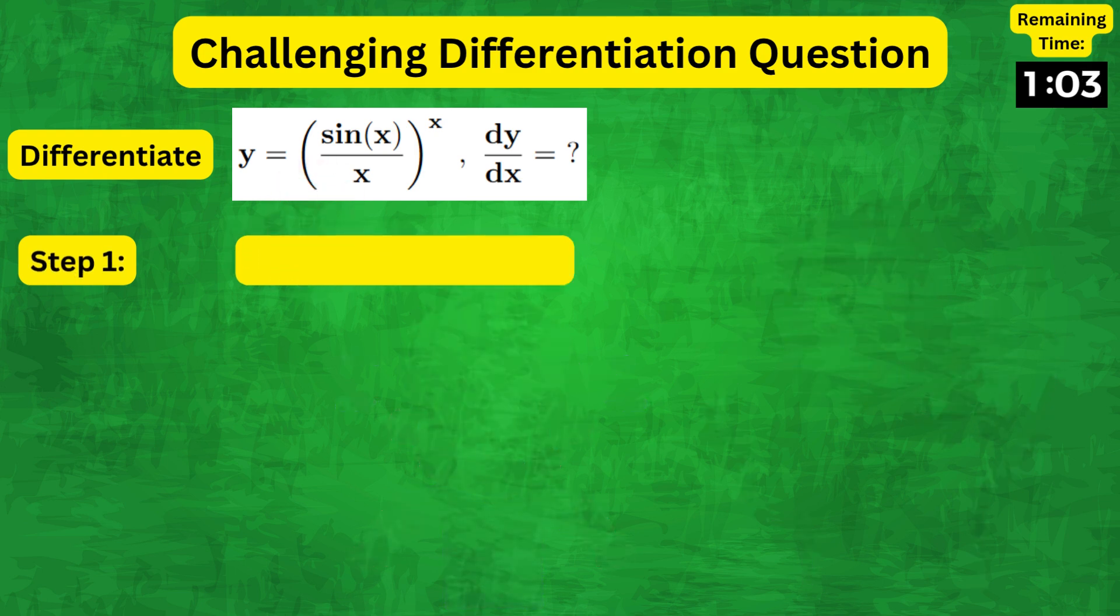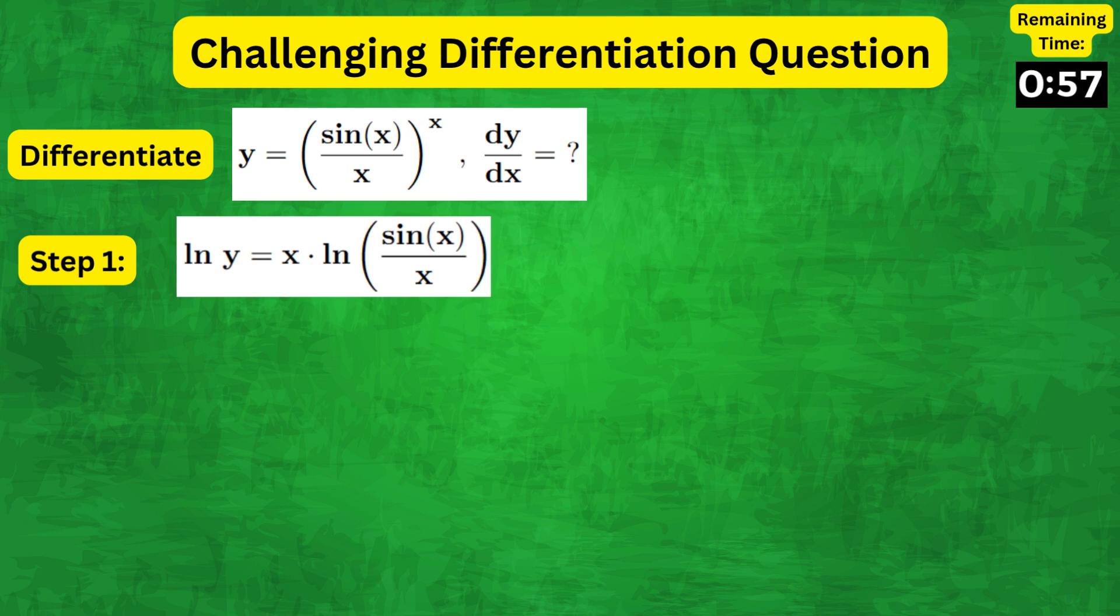The key is to take natural logs on both sides to get natural log of y equals to x, natural log of sine x over x.